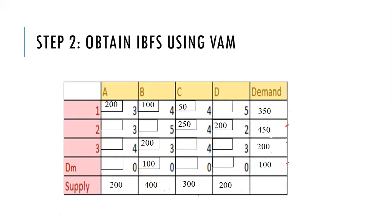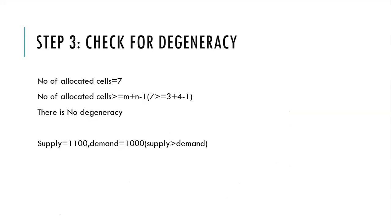We check for degeneracy. There are seven allocated cells in total. The condition requires the number of allocated cells to be greater than or equal to m + n − 1, which is 3 + 4 − 1 = 6. Since 7 ≥ 6, the condition is satisfied and there is no degeneracy in this problem.